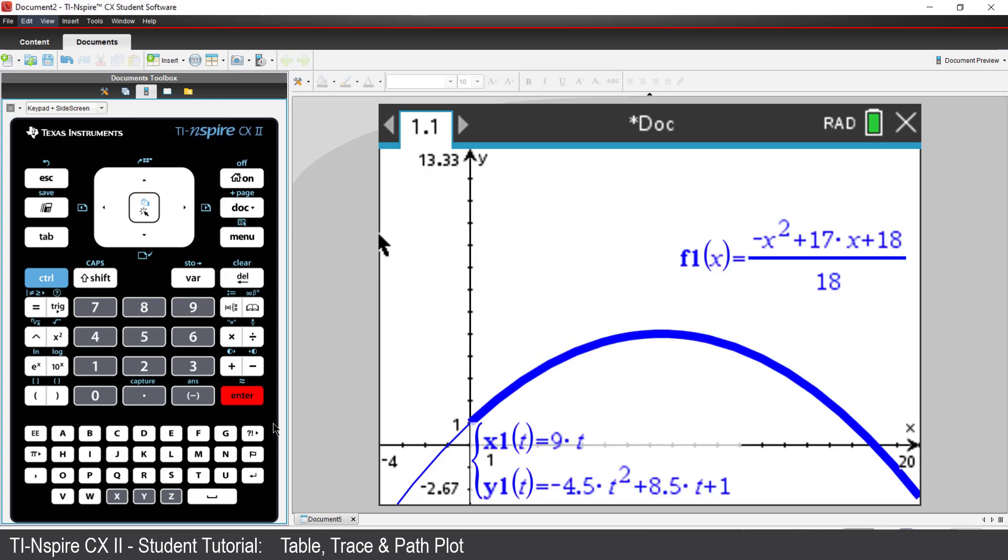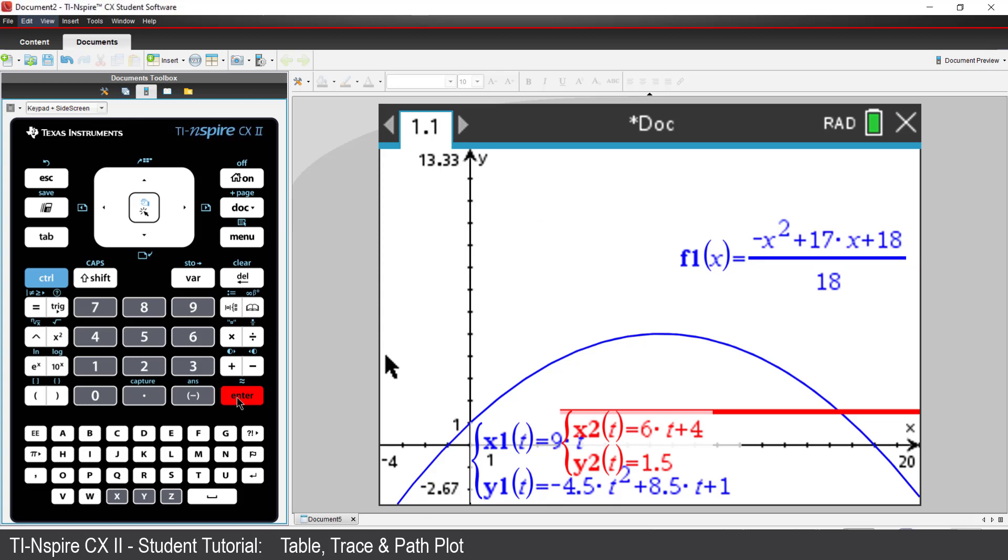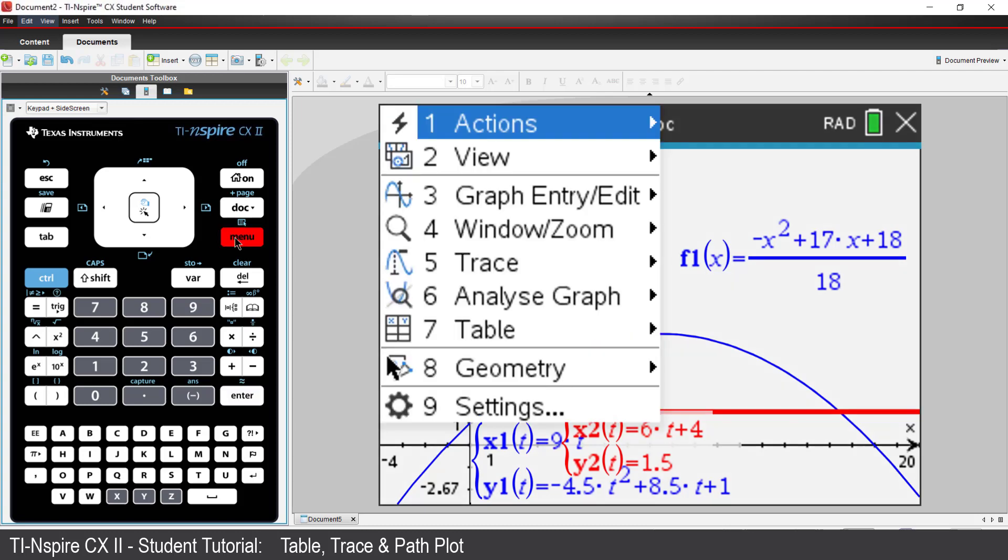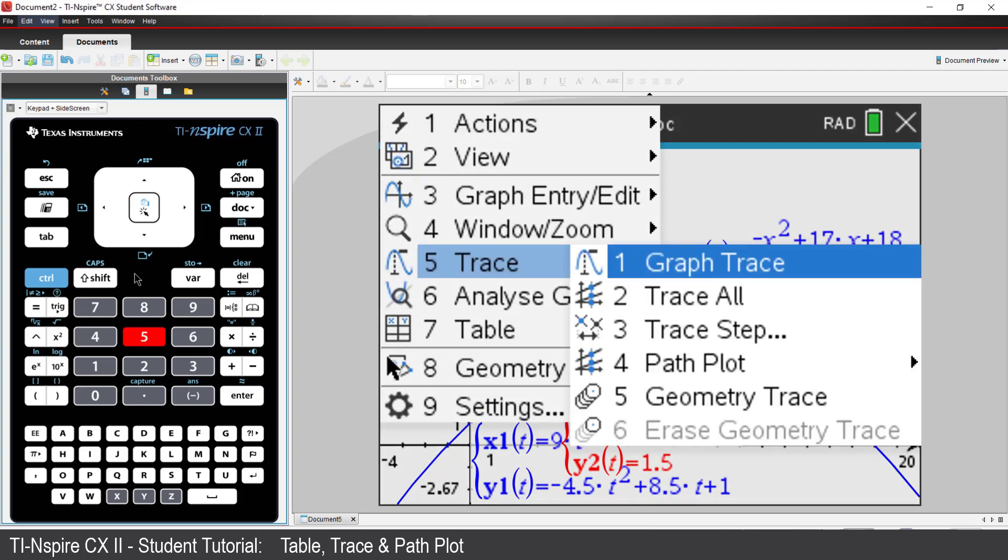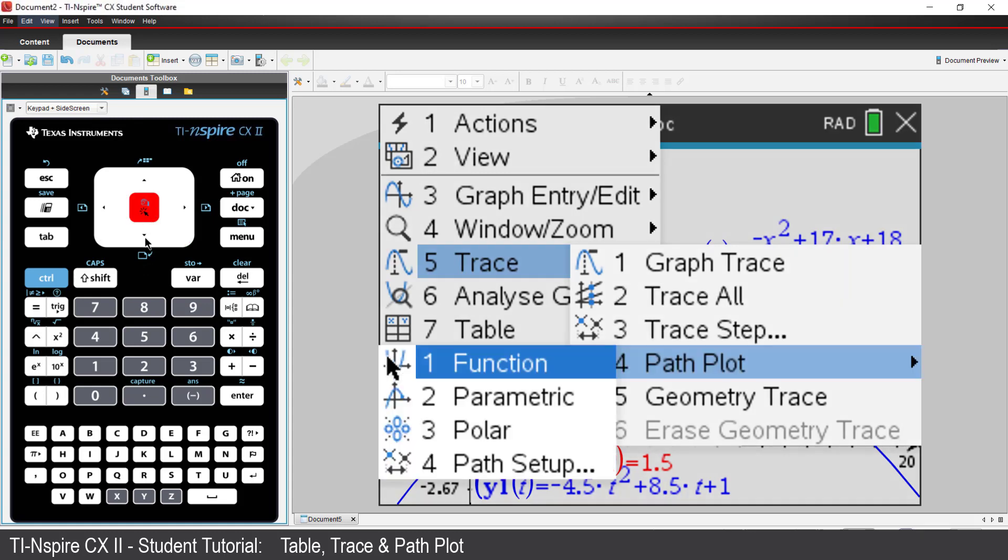Suppose the projectile is a football, and a player is chasing after the ball. The player runs at a speed of 6 meters per second but starts 4 meters ahead of the ball when it's kicked. Let's see if the player is able to mark the ball. The graph shows that the player definitely crosses paths with the ball. However, we can do a path plot to see if the ball and player are in the same place at the same time.